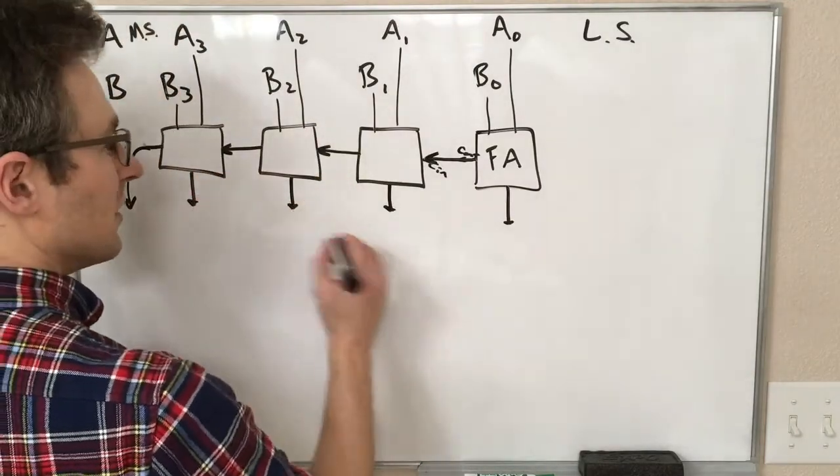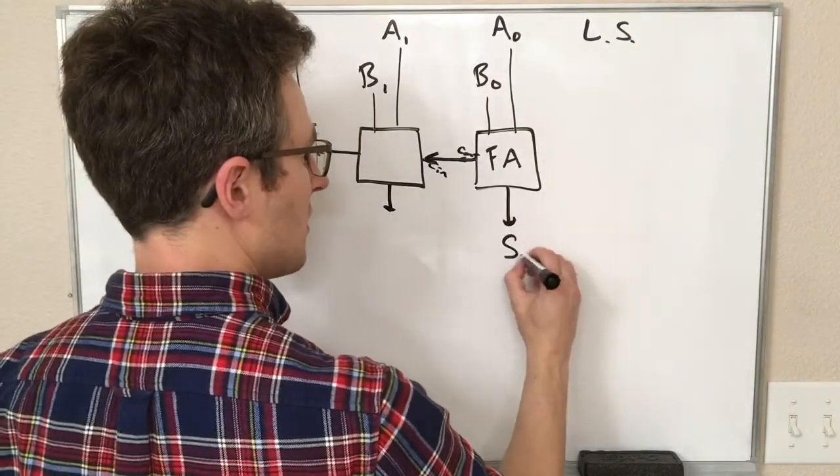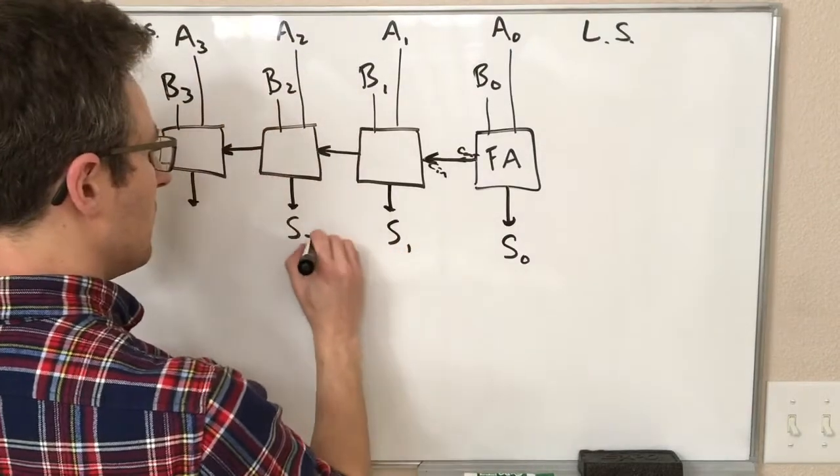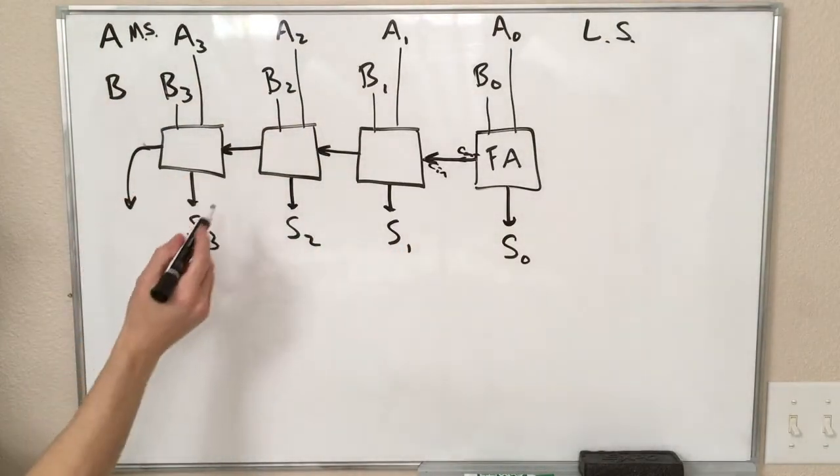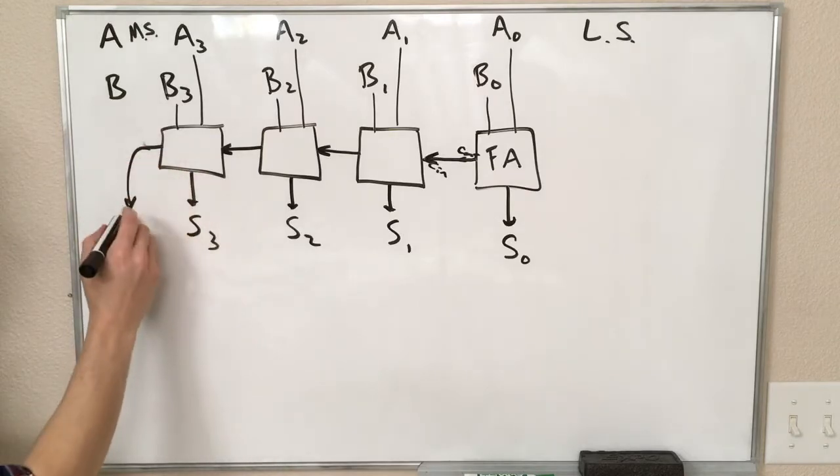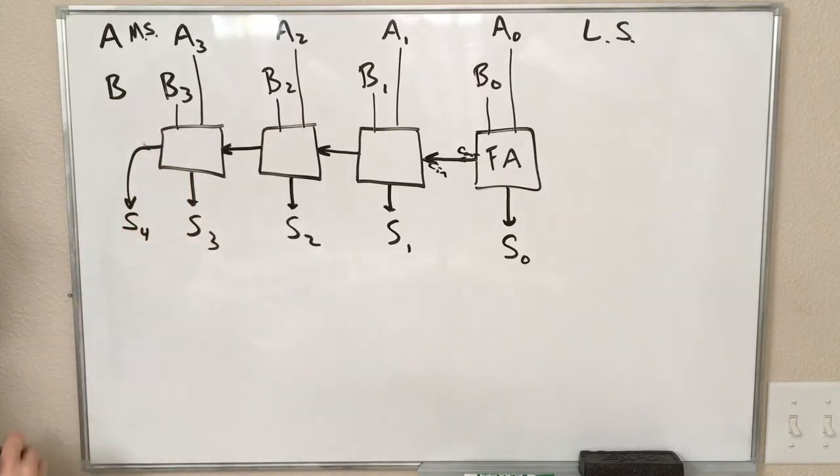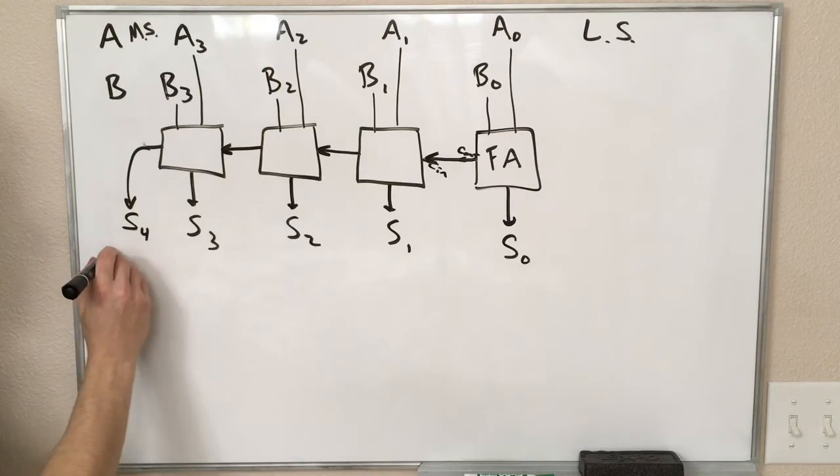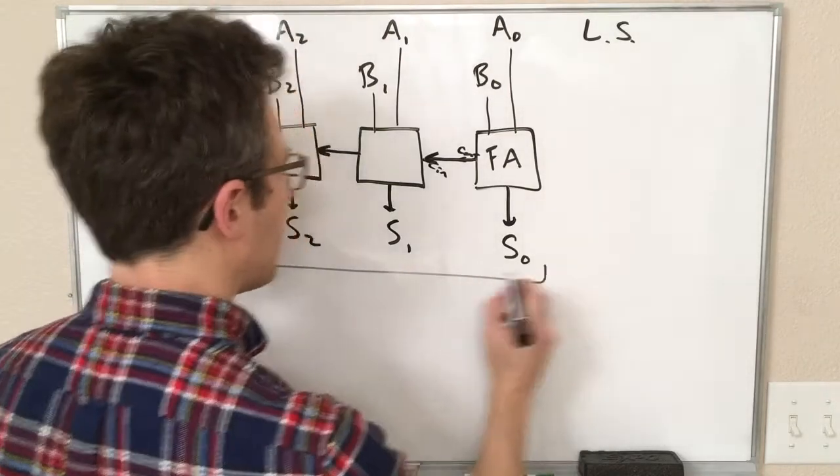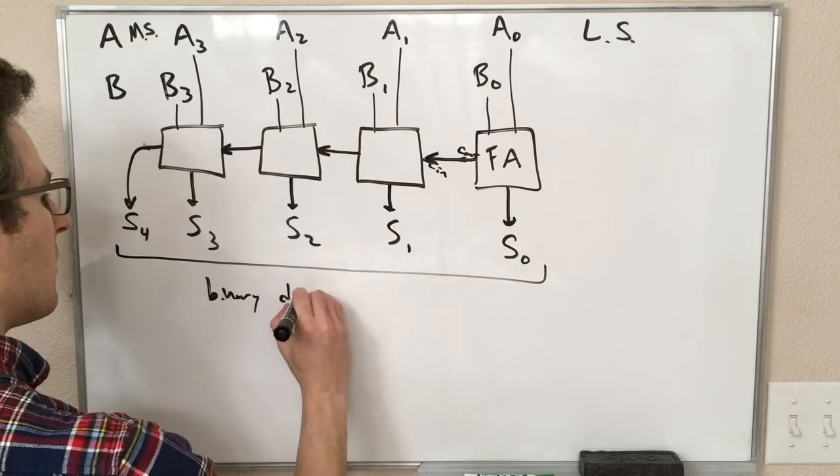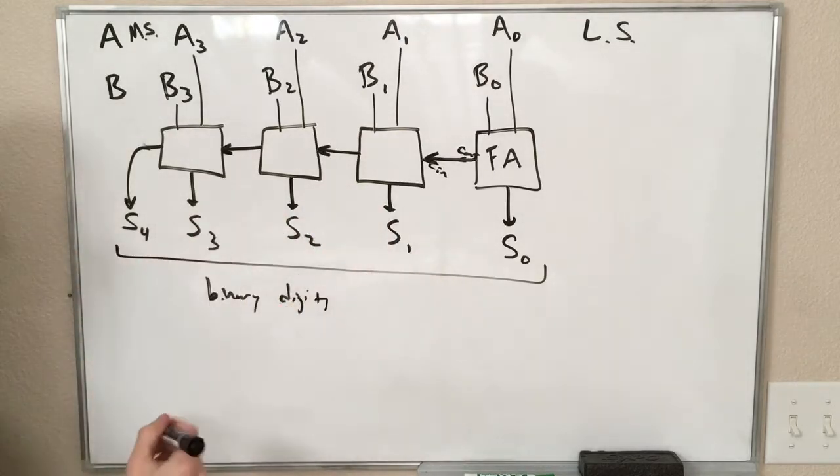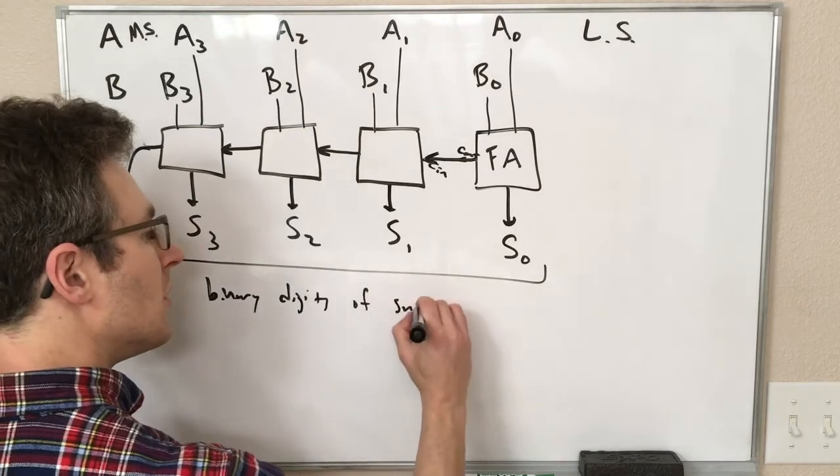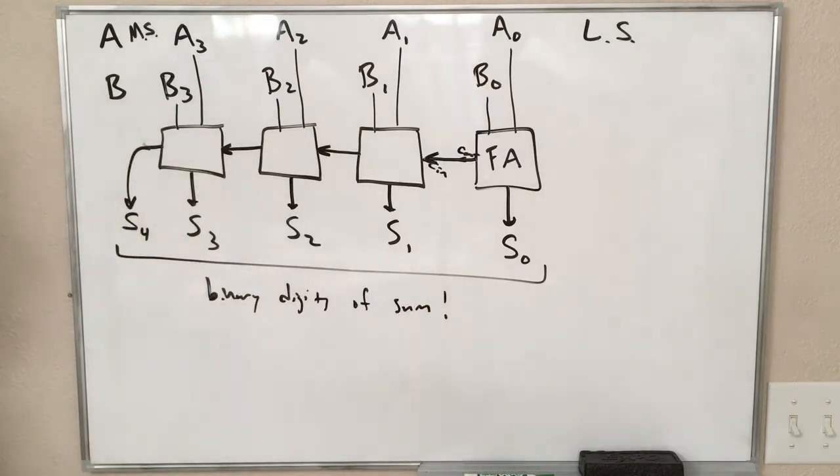And then we have these sum outputs. So our sum, we're also going to label these sums. This is S0, S1, S2, and S3. And this also, this carry out, can give us an S4. So these now are the binary digits in the same order, in the same left to right order that we would write on the board, of the sum.